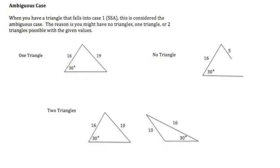Now we are moving on to what we call the ambiguous case. When you have a triangle that falls into that first category we said was side-side-angle, and we have two sides and an angle not included, we have what we call the ambiguous case.